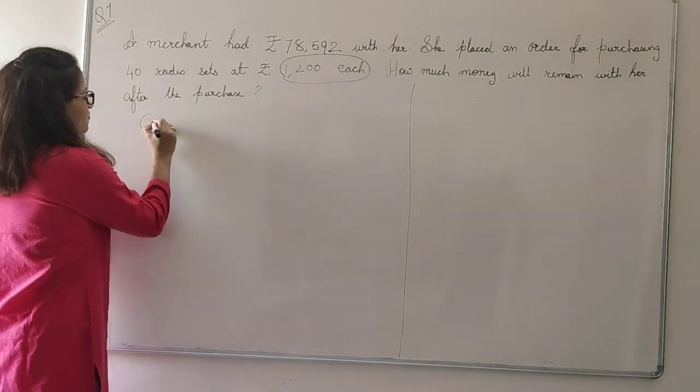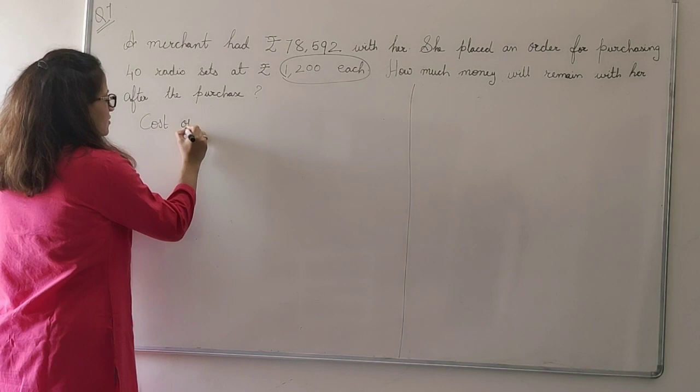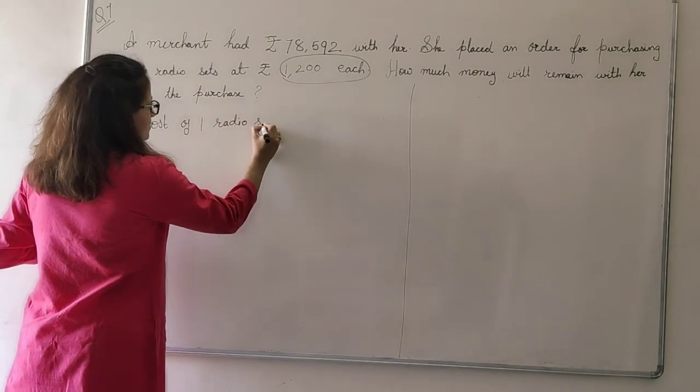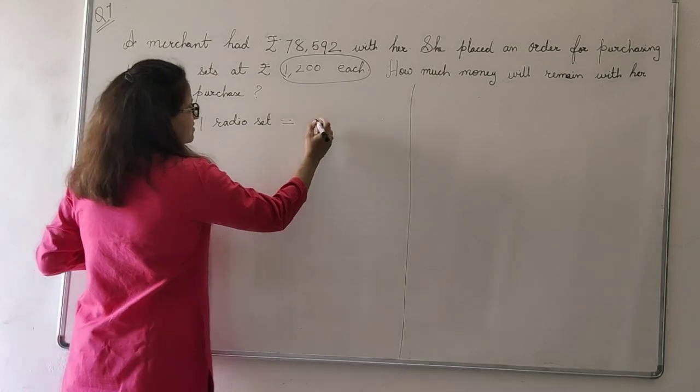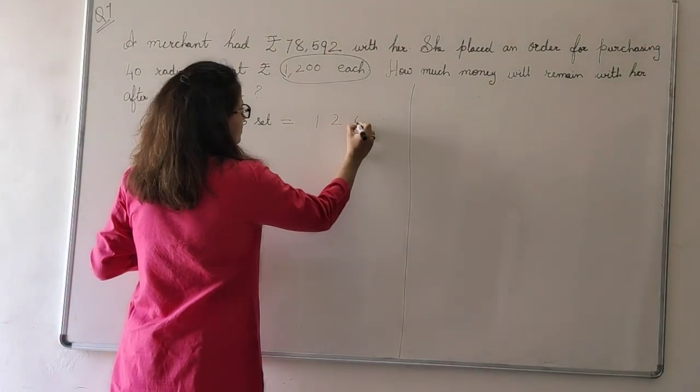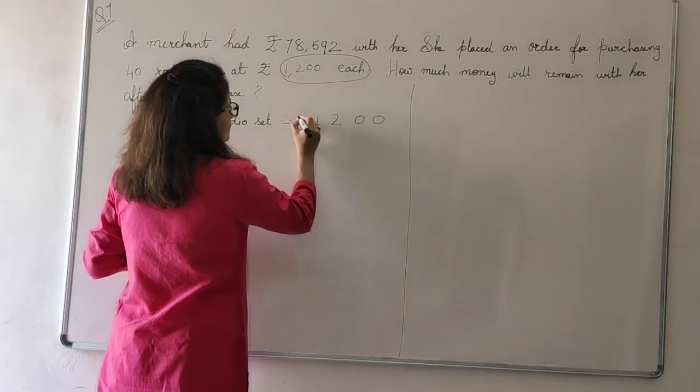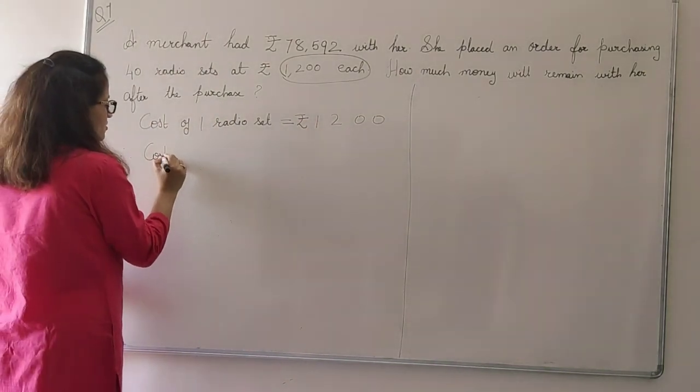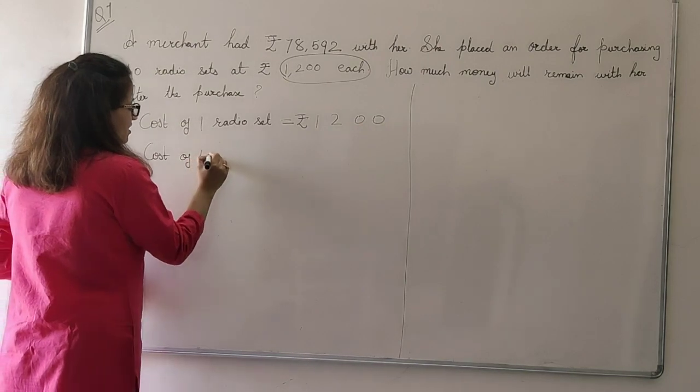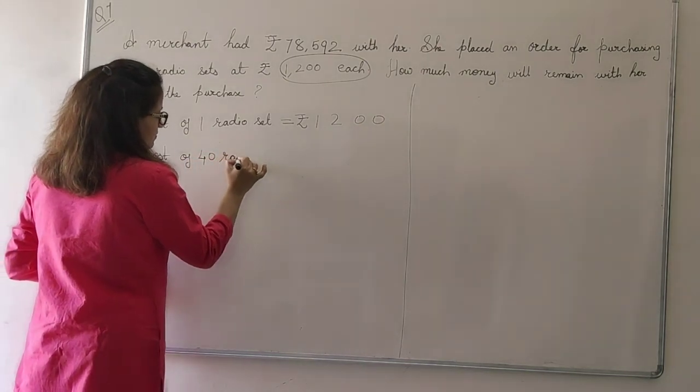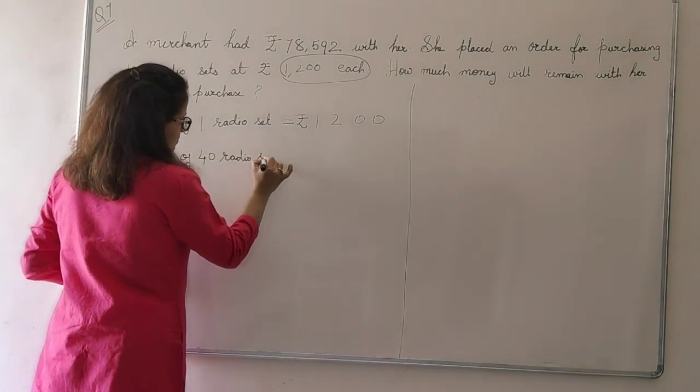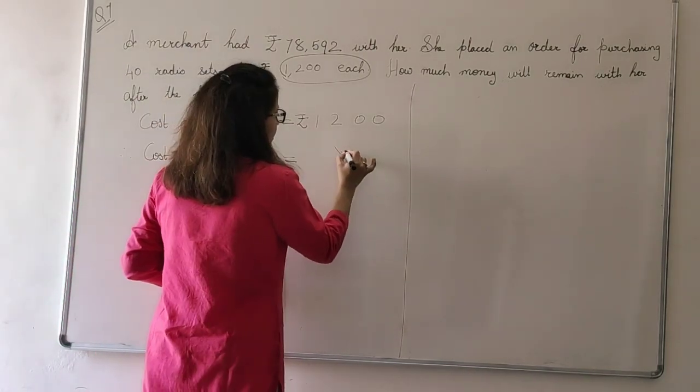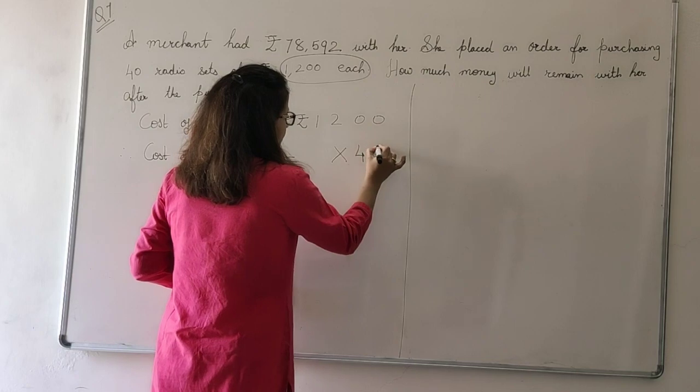Cost of one radio set is rupees 1200. Therefore, cost of 40 radio sets will be rupees 1200 multiply by 40.